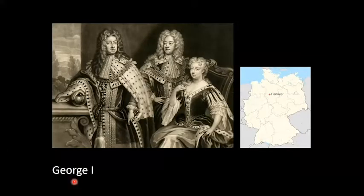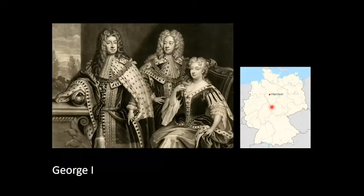Here we see George himself, known to us today as George the First. He reigned from 1714 to 1727, and we see him with his eldest son, the future George the Second, and George the Second's wife Caroline. To the right is a map of modern Germany showing the site of the city of Hanover, where the Hanoverians were based. When George inherited the throne in 1714, he and his wife Sophia Dorothea had two children, and when George died he was succeeded by his son George the Second.